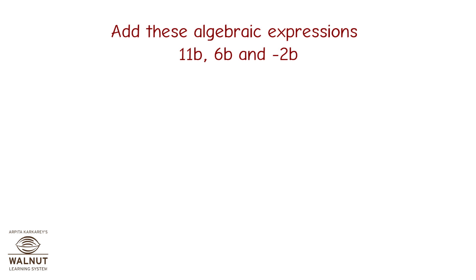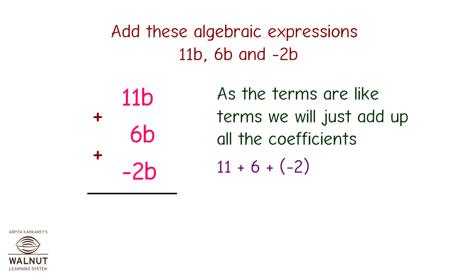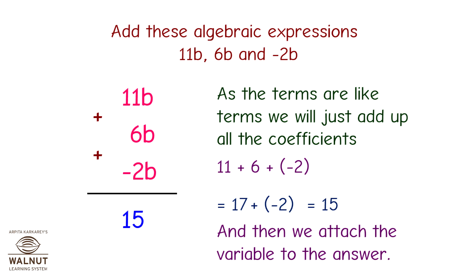Add: 11b, 6b, and -2b. Arranging vertically: 11b + 6b + (-2b). As the terms are like terms, we add all the coefficients: 11 + 6 + (-2) = 17 + (-2) = 15. Attaching the variable, the answer is 15b.